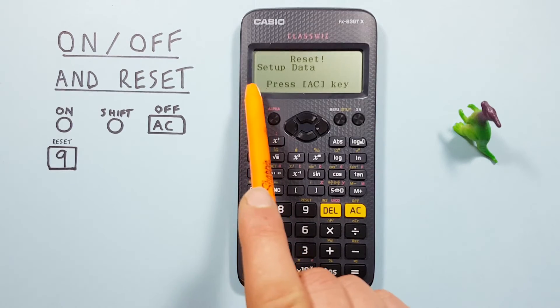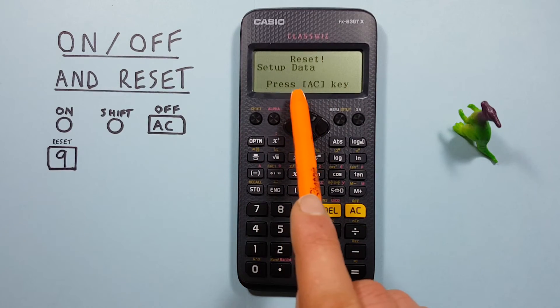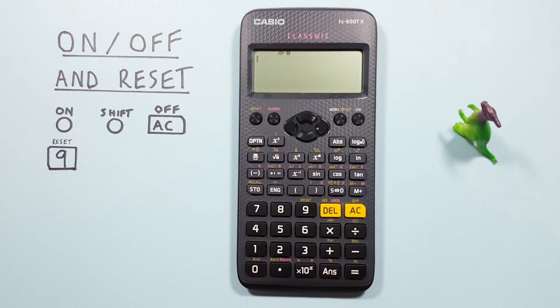There we go. Our calculator has now been reset, and if we press the AC key, we're back to our home screen and we're good to go.